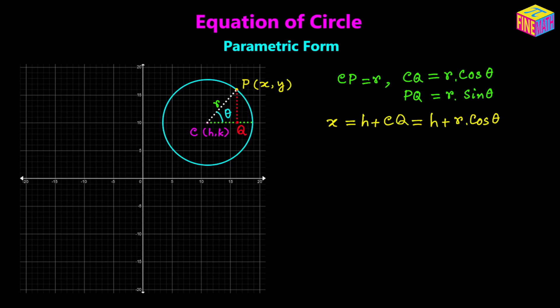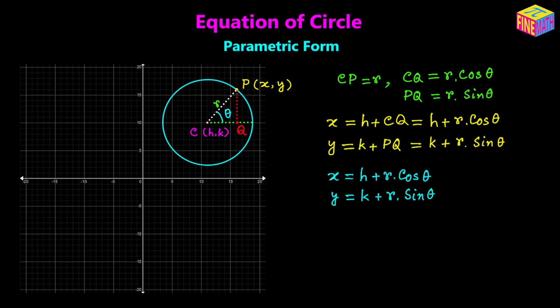Next, if you think about the y-coordinate of point P, that will be equal to the y-coordinate of the center plus PQ, and that can be written as K plus R times sine of theta, because PQ is equal to R times sine of theta. And from here, if we summarize it, we can say x is equal to H plus R times cosine of theta, and y is equal to K plus R times sine of theta.